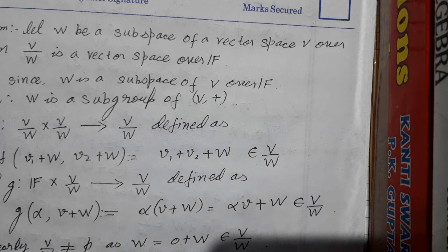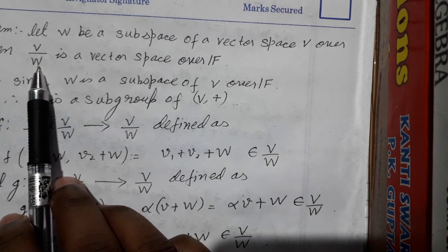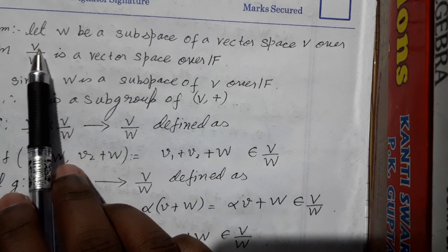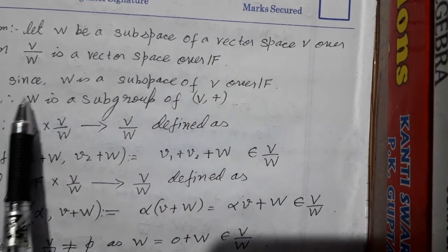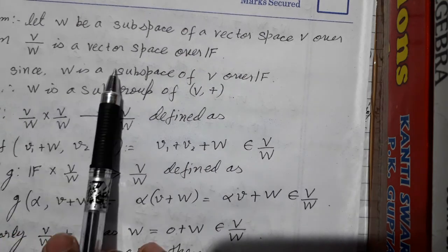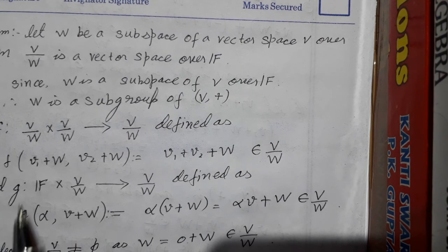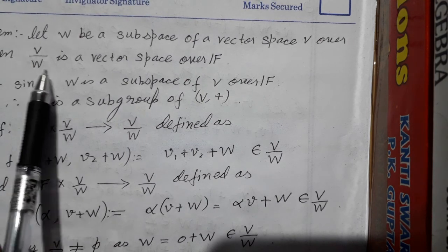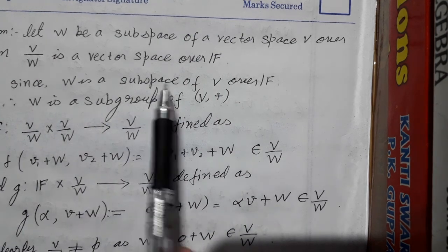In the case of a vector space, when you want to define a quotient space, whatever is at the bottom should be a subspace. Now we have to show that this forms a vector space over the field F. W is already a subspace of V over F. If W is not a subspace of V, then this quotient space cannot be defined. So first of all, W should be a subspace of V over F.